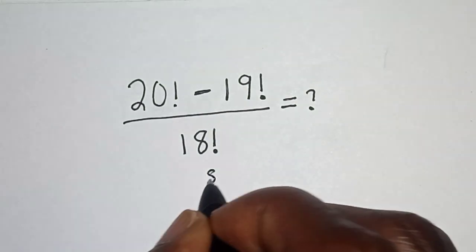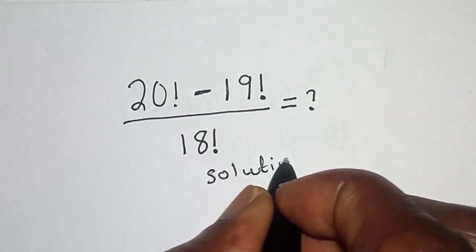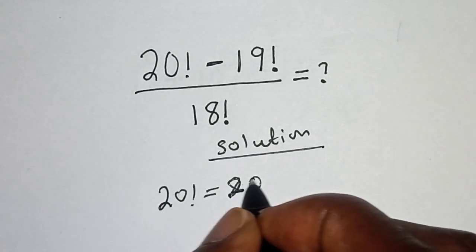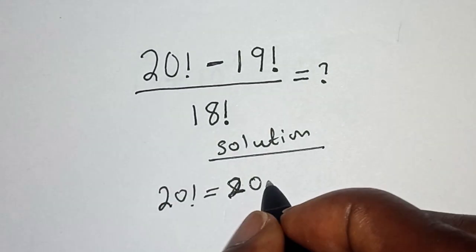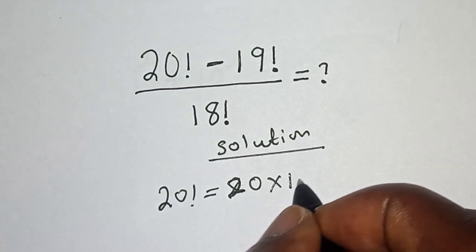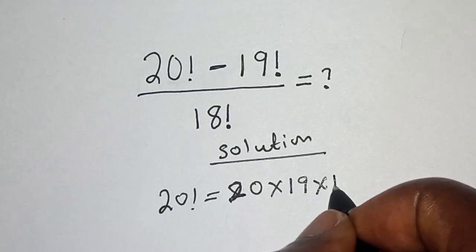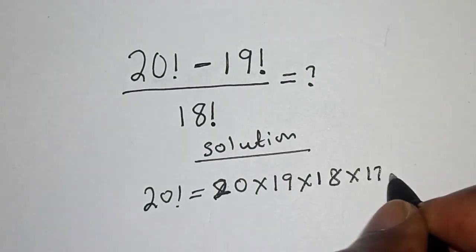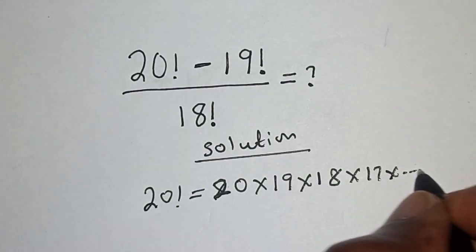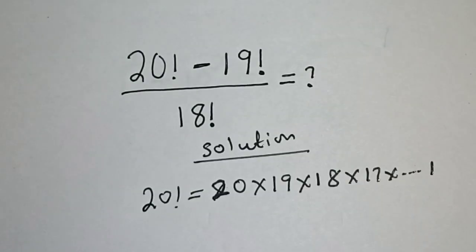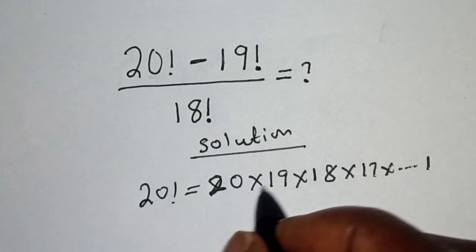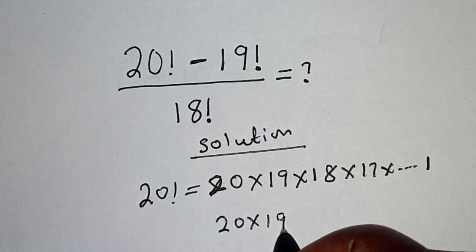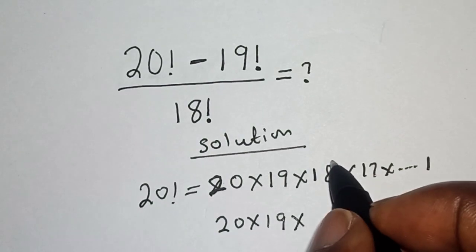Solution: 20 factorial can be expressed as 20 times 19 times 18 times 17 multiplied by 2 times 1. Then this is 20 times 19 multiplied by the whole of this, from here down to this is 18 factorial.